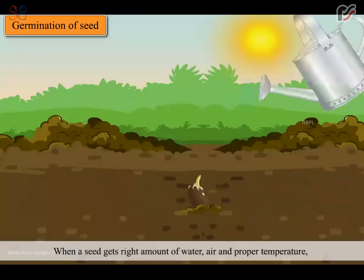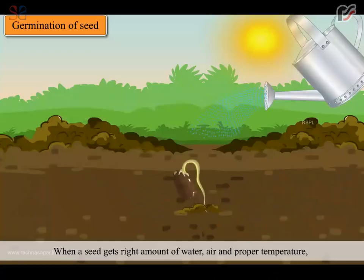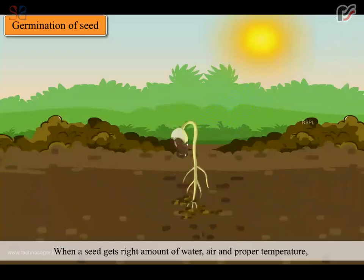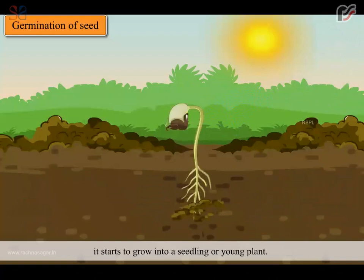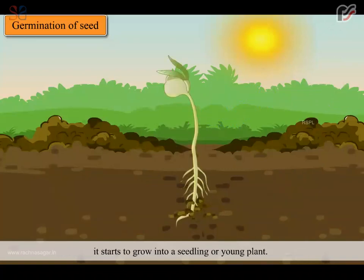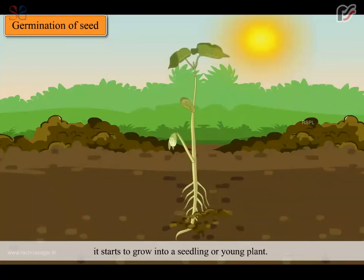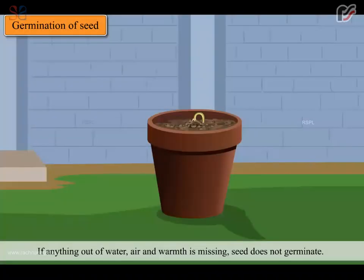When a seed gets the right amount of water, air and proper temperature, it starts to grow into a seedling or young plant. This process is called germination. If anything out of water, air and warmth is missing, the seed does not germinate.